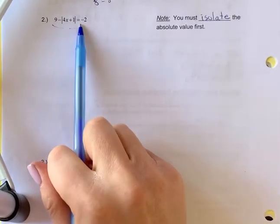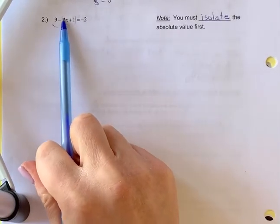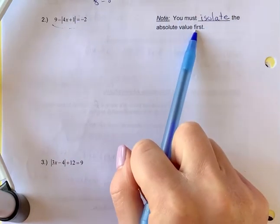Question number two. When you have an equation that looks like this, you want to get the absolute value by itself. So you want to isolate the absolute value first.